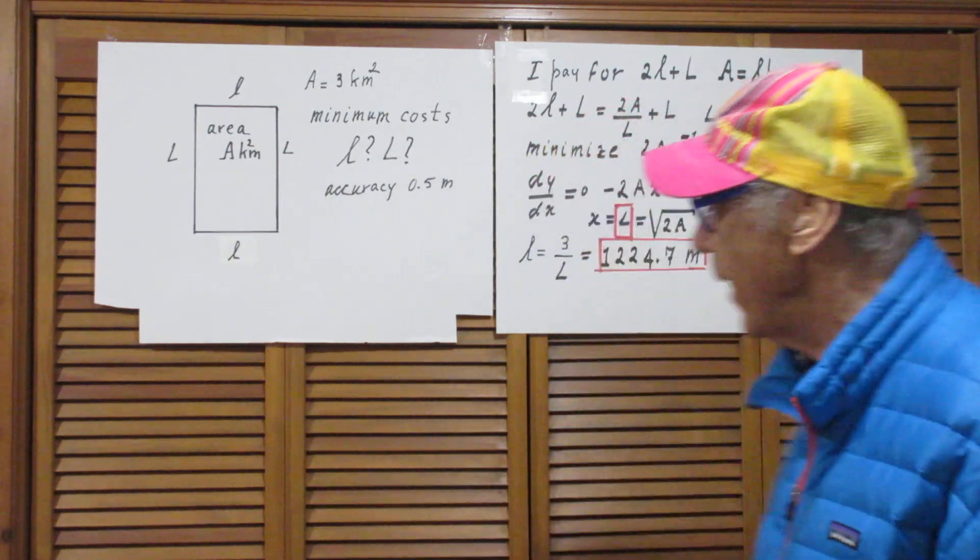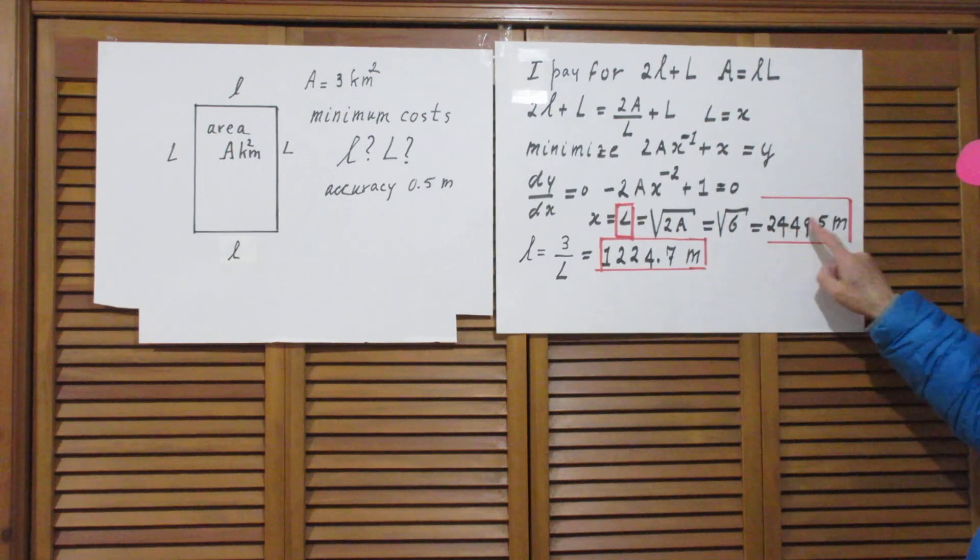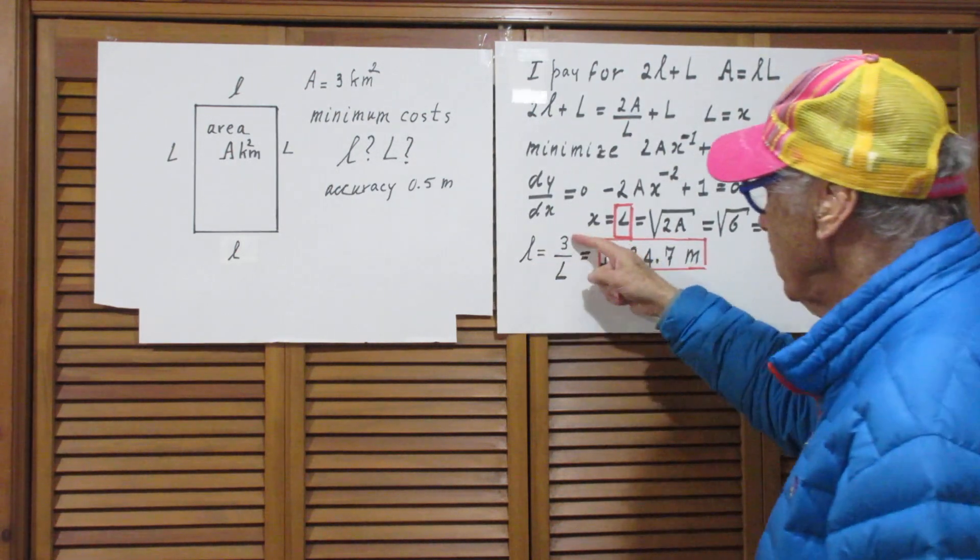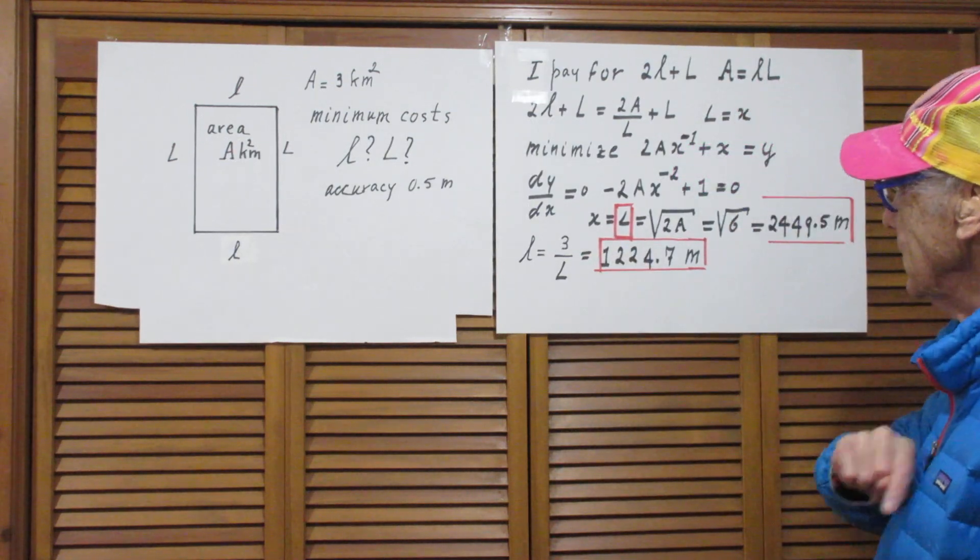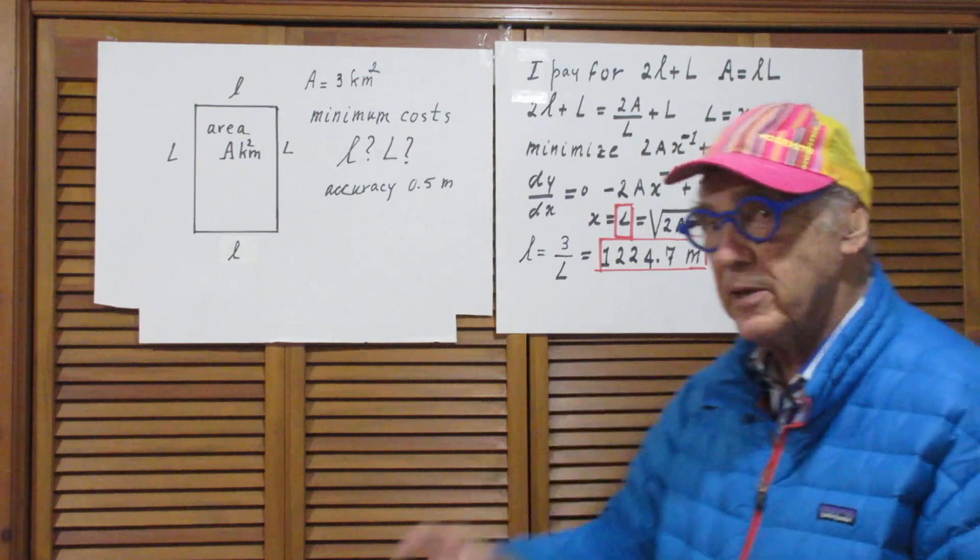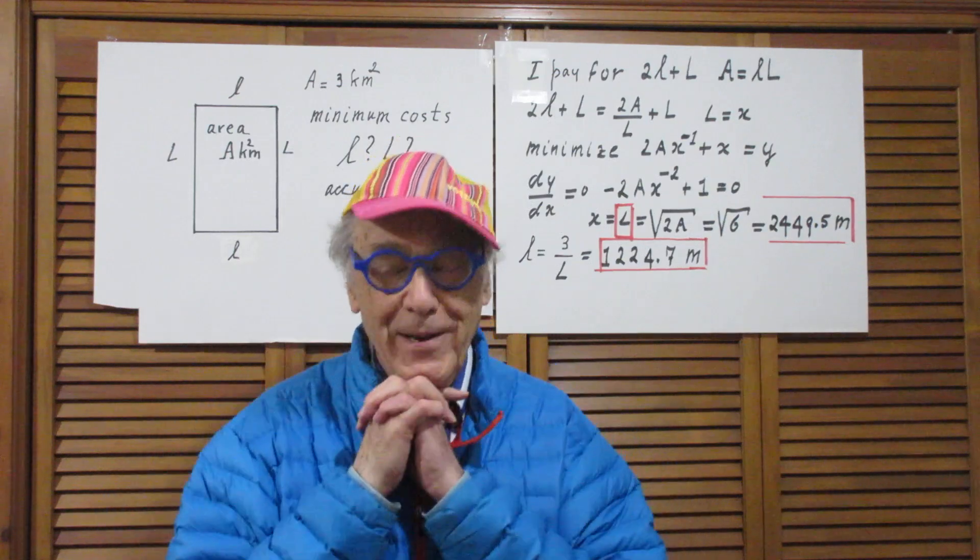And that is the square root of 6, which is 2449.5 meters. Small l is 3 divided by capital L, so that is 1224.7 meters. End of story, as simple as that.